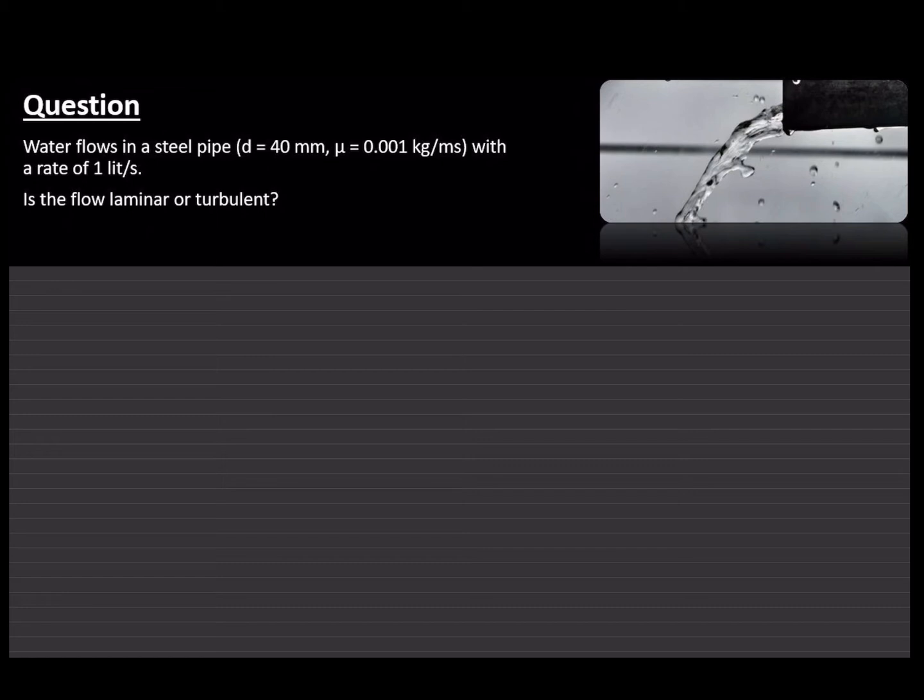And the formula to work out Reynolds number is Re equals rho V d divided by mu. In here, the rho represents density, V is the velocity at which the fluid is traveling, d is the diameter of the pipe, and mu is the viscosity of the fluid.